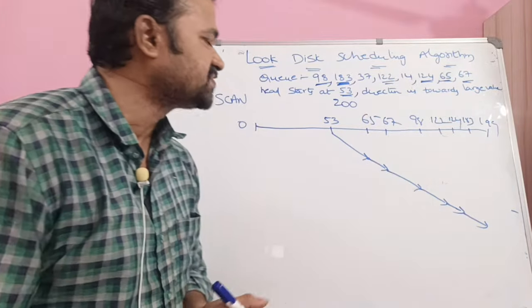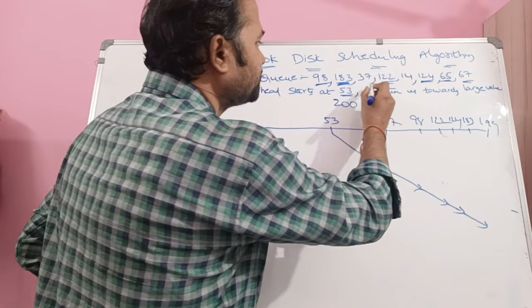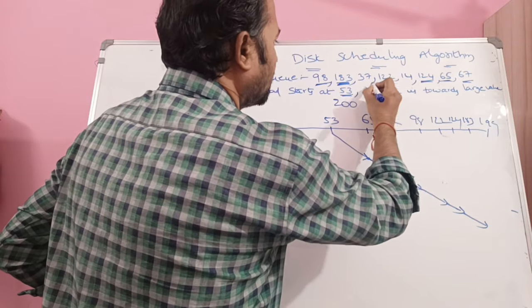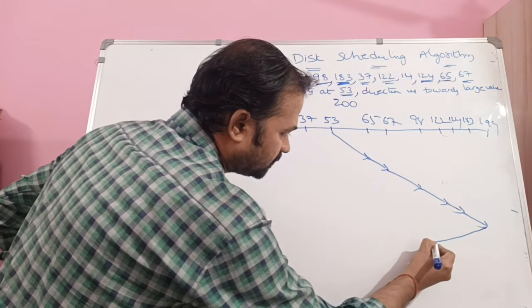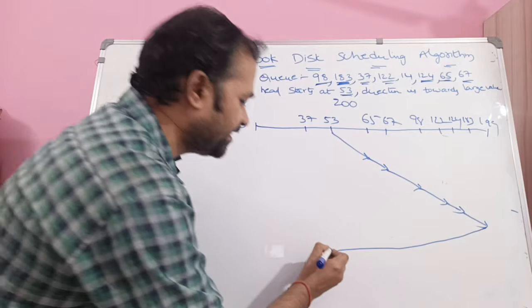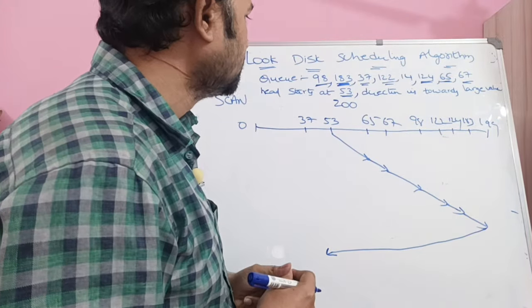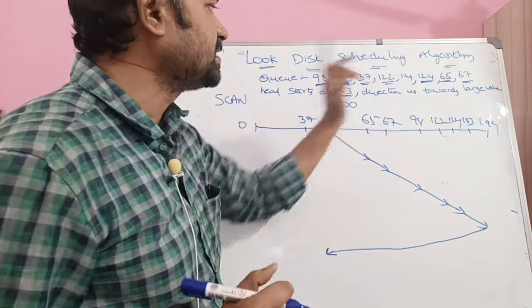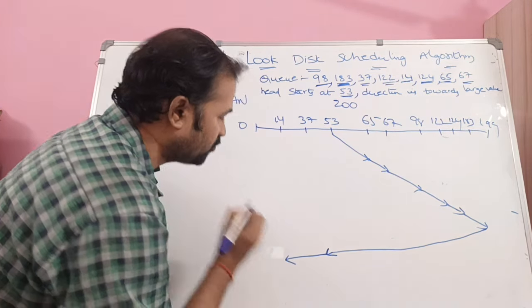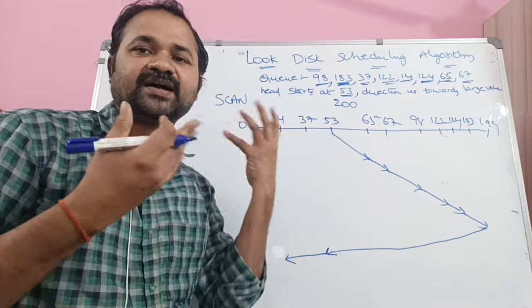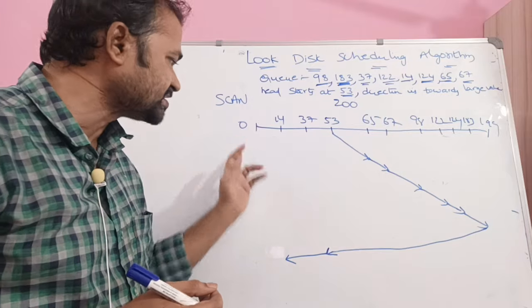After the final request at 183 is done, we handle the remaining requests while moving towards the starting cylinder. The next remaining request is 37, so we process cylinder 37. After 37, the only remaining request is 14, so we handle cylinder 14. There is no need to process cylinder 0, just as in SCAN there is also no need to process cylinder 0.